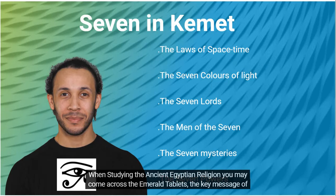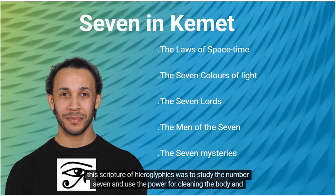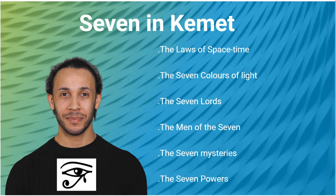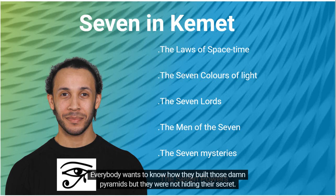When studying the ancient Egyptian religion, you may come across the Emerald Tablets. The key message of this scripture of hieroglyphics was to study the number seven and use the power for cleaning the body and mind. They said to study the seven mysteries, the seven powers, the seven lords, the seven laws, and the men of the seven. Everybody wants to know how they built those pyramids, but they were not hiding their secret.